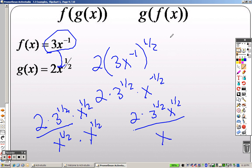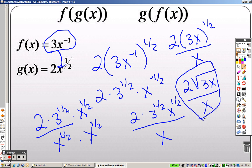I can rewrite the top as 2 times 3x all to the 1 half, because I pulled the 1 half out, because they all have that in common. And I can rewrite that as 2 square roots of 3x over x as my answer.